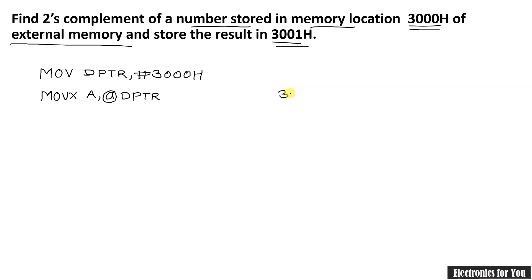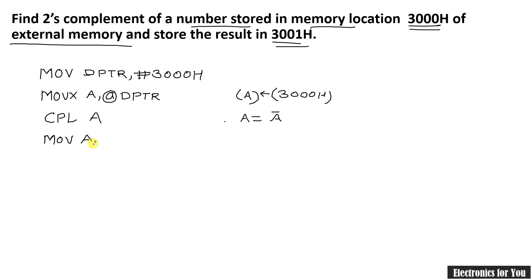The content of memory location 3000H is now copied into the accumulator. To find the two's complement, the same procedure is used: CPL A complements the accumulator to get the one's complement. Then we use INC A or ADD A, #01H to add 1. The result — the two's complement — is stored back into the accumulator.